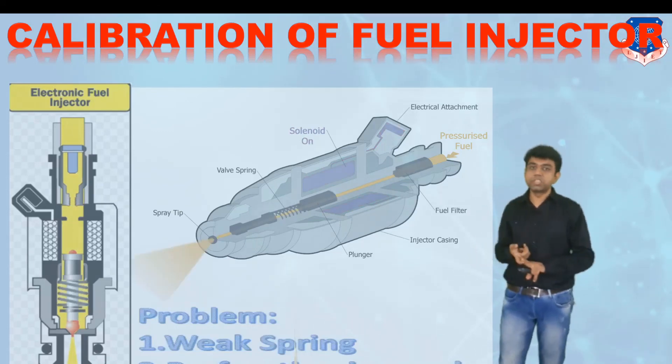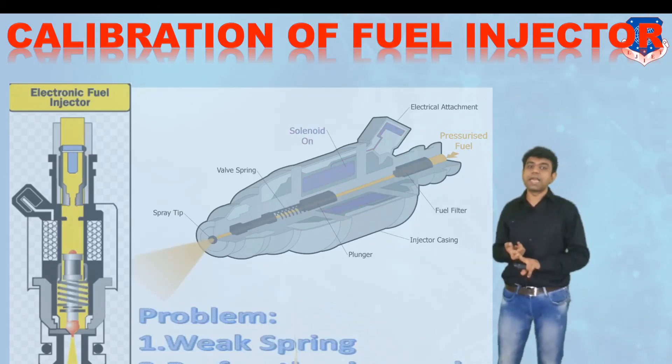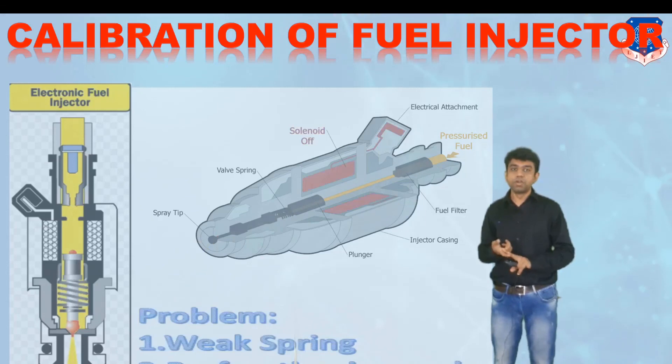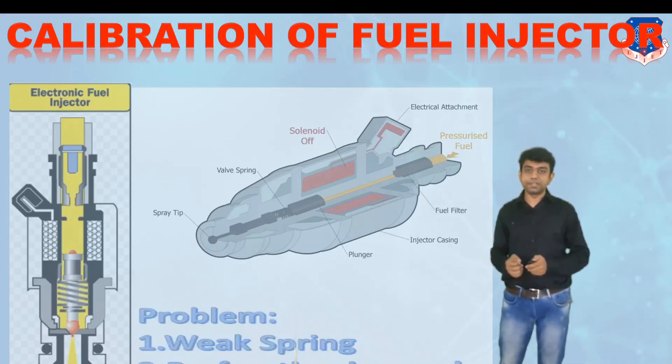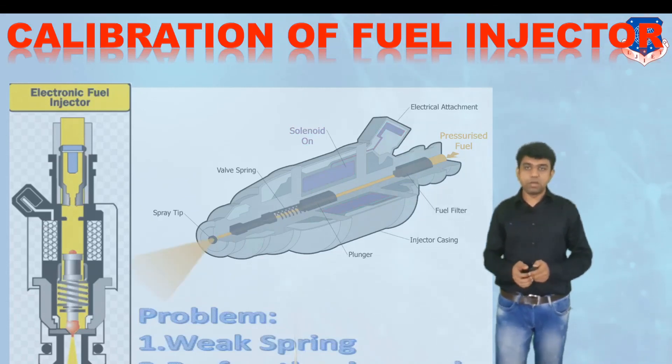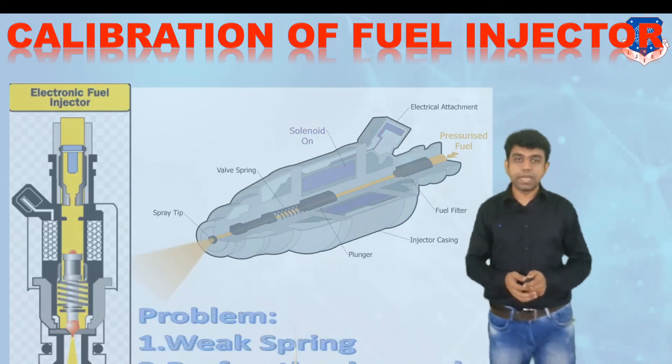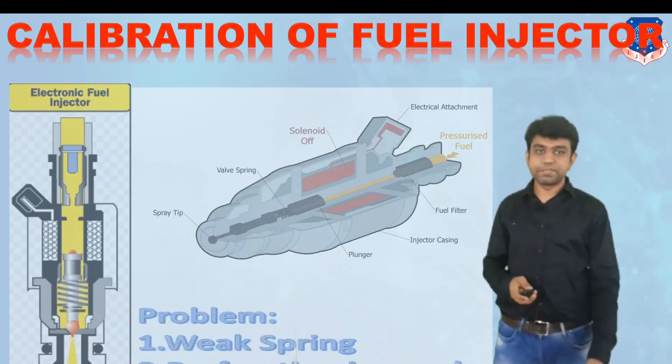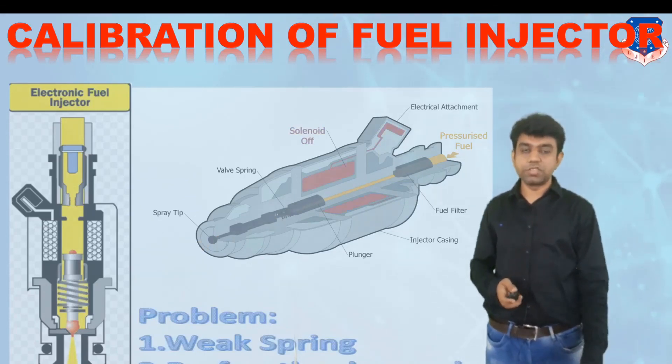These two things — fuel pressure via the spring and spray distribution via the nozzle tip — are checked under the calibration of the fuel injector. That is all about today's lecture. Thanks for watching.